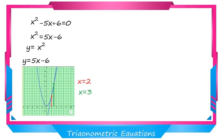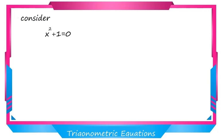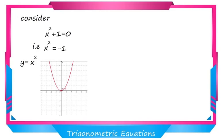This alternate method helps understand the concept of trigonometric equations. Now take another equation: x squared plus 1 equal to 0. There are no real roots for this equation. Applying the graphical method, we get x squared equal to minus 1. Draw y equal to x squared and y equal to minus 1. The line y equal to minus 1 and the parabola will not intersect — there is no point of intersection, and hence there is no solution. This idea is also important to understand the trigonometric equation.